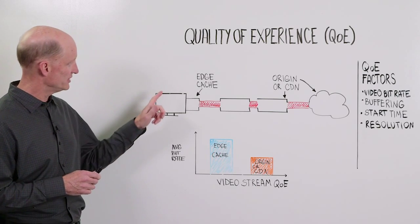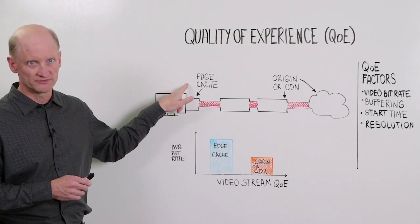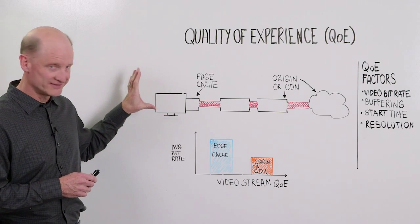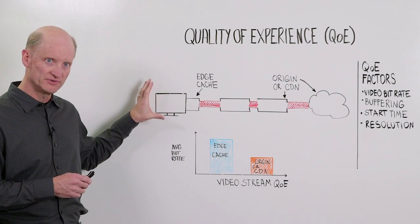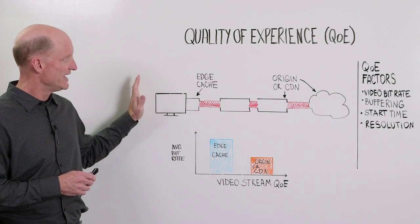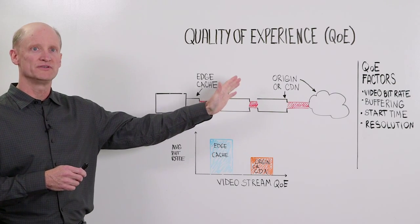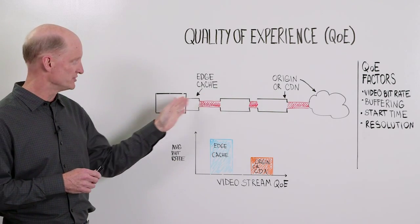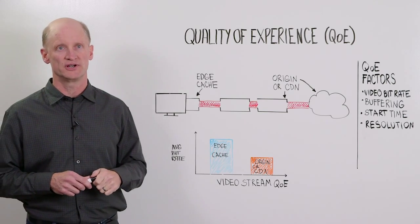By deploying the edge cache in the operator network at the neighborhood level, we're able to both deliver a higher quality video stream, improve QoE for the consumer, and save the network operator the network investment that would have been required to create the capacity upstream to deliver all of this video traffic.